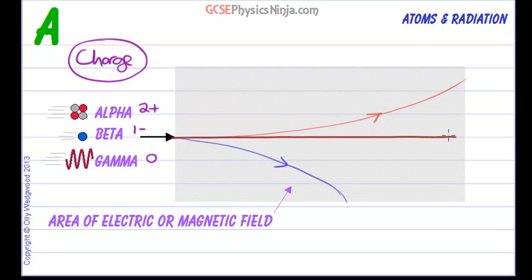How about that? So that's gamma, no deflection because it has no charge. This is alpha and this is beta.